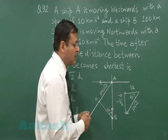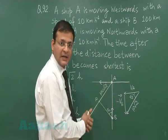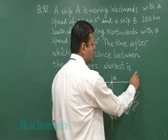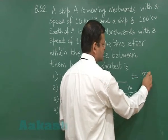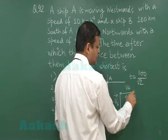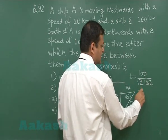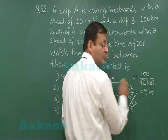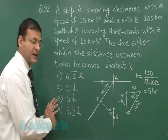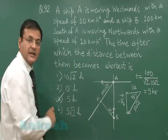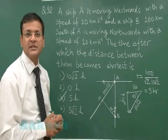Now you are supposed to calculate the time. Time is simply distance upon velocity — relative distance upon relative velocity. So time equals (100/√2) divided by (10√2), which equals 100 divided by 20, giving 5 hours. If you look at the options, you will find that the third option says 5 hours. So this is the correct answer for question number 92.